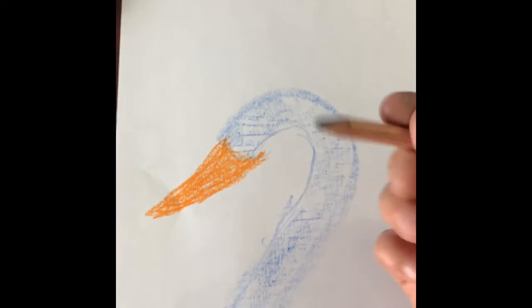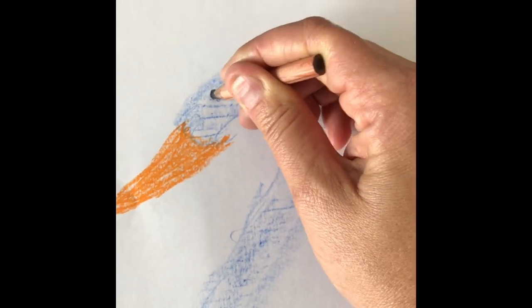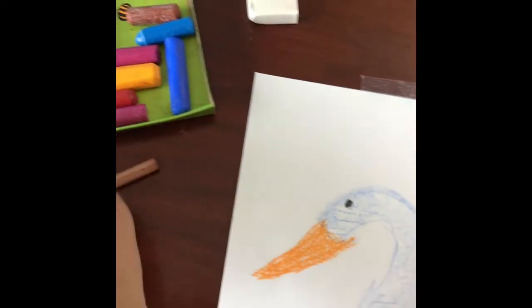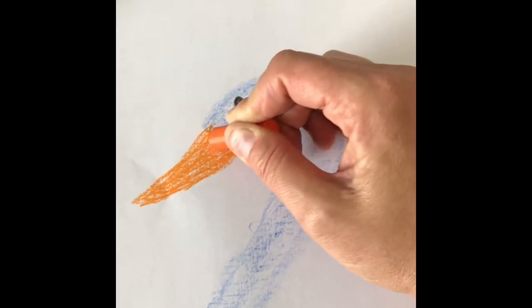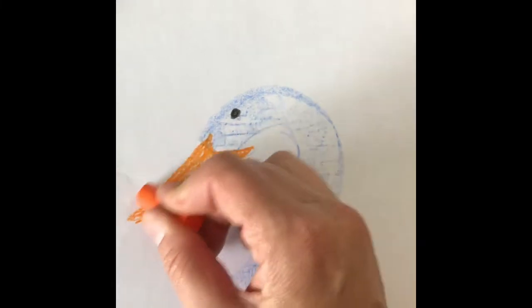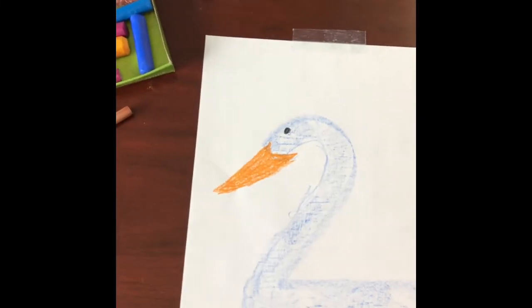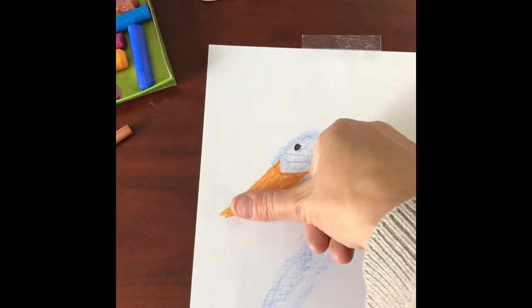And it's most definitely missing a beak, and it's missing an eye that'll make it more swan-like.